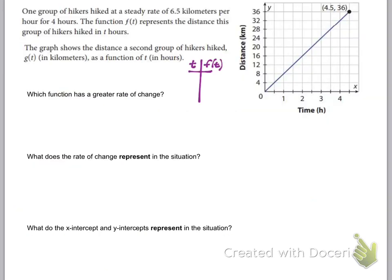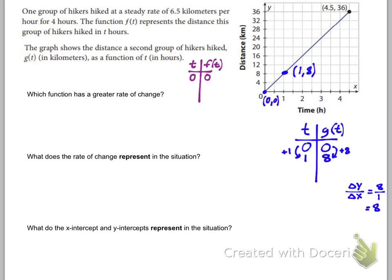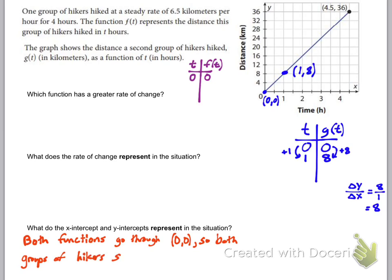Now for the x-intercepts and y-intercepts: both functions have (0, 0), so they both go through the origin. What that means is that both groups of hikers started at a distance of zero — when time t is zero, the distance (the function value) is also zero. That's what the x and y-intercepts represent here.